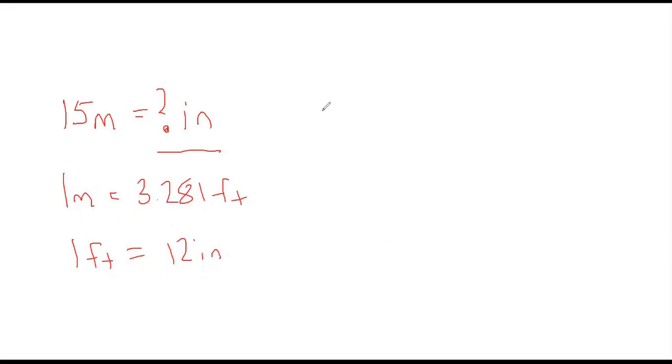We always set it up with our original as a fraction, right? 15 meters over one. Now what we want to do is we want to cancel out units. We start with meters, we want to get to inches, so meters have to go in the denominator. That way our meters are going to cancel out.